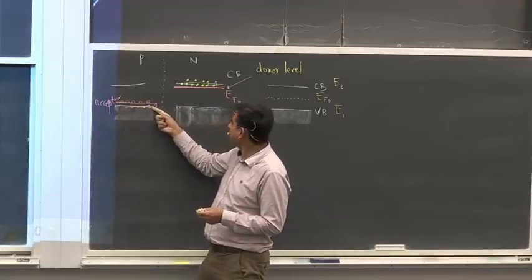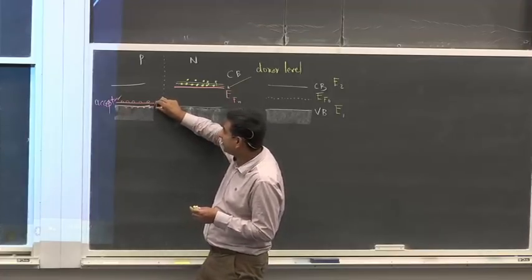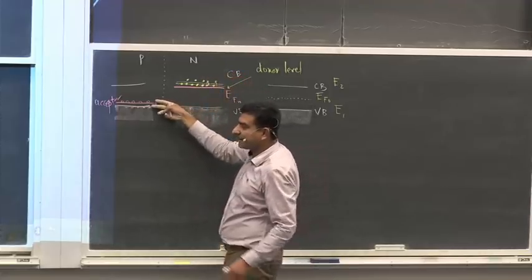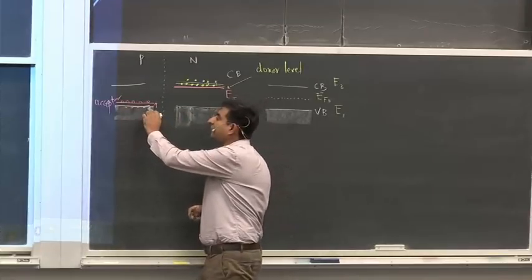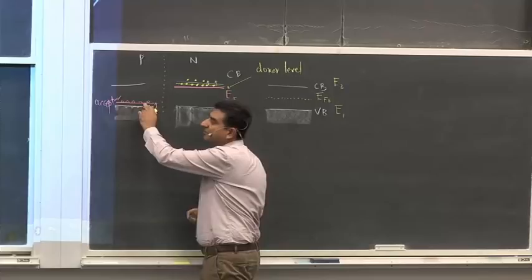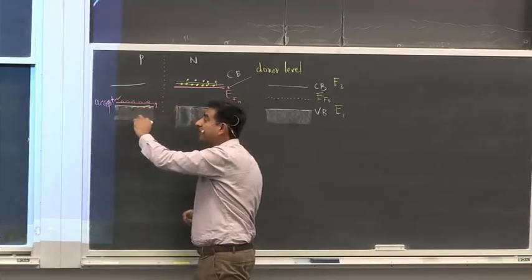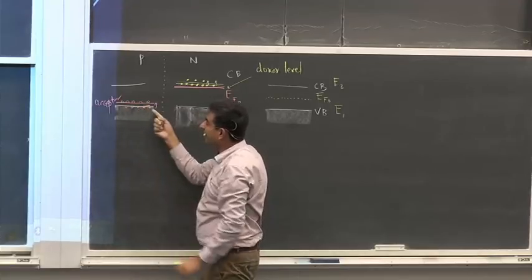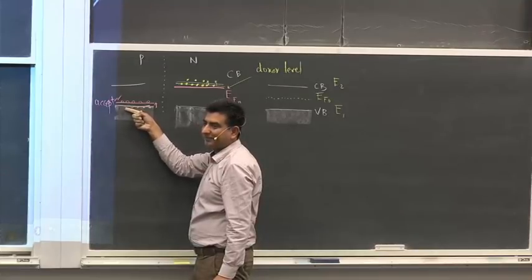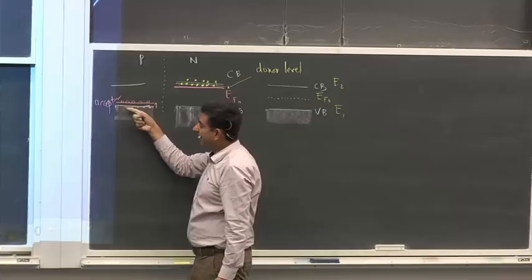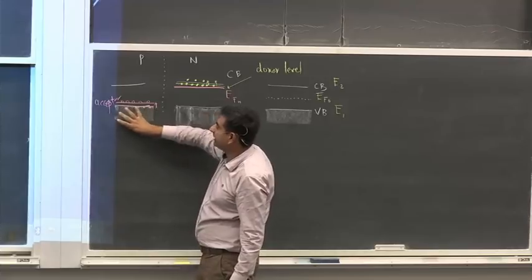An electron at the tip of the valence band can be easily promoted to the acceptor level because this is a really small gap — at the order of millielectron volts. Electrons from the top of the valence band can be easily promoted to the acceptor level. These acceptor levels are derived from the acceptor impurity atoms. When electrons are promoted, it creates holes in their wake inside the valence band. These are created by temperature, so you get holes inside the p-type material.